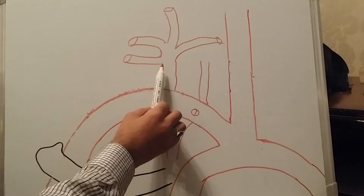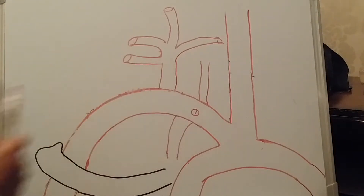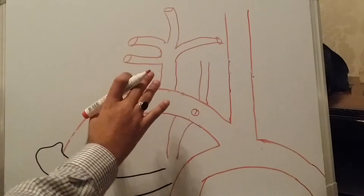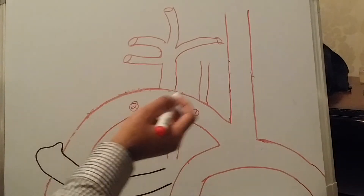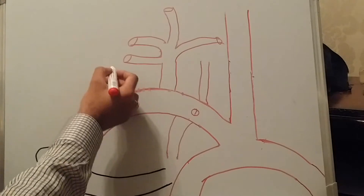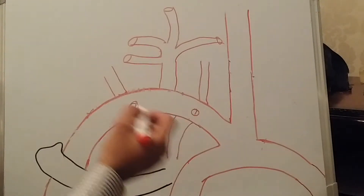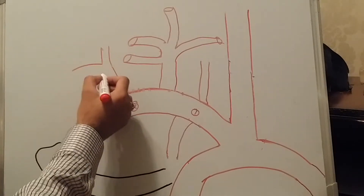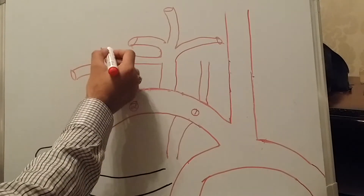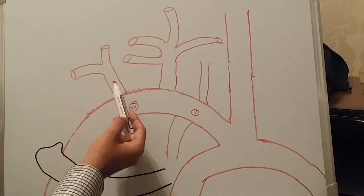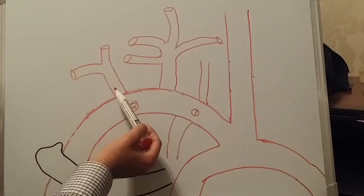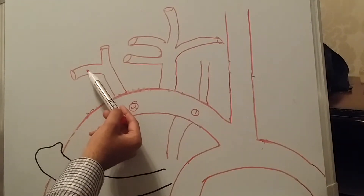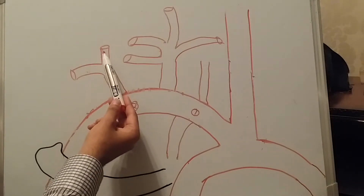The second portion of the subclavian artery is the part between the scalenus muscles. It gives rise to only one branch, which is known as the costocervical trunk. The costocervical trunk gives rise to two branches: the superior intercostal branch and the deep cervical branch.